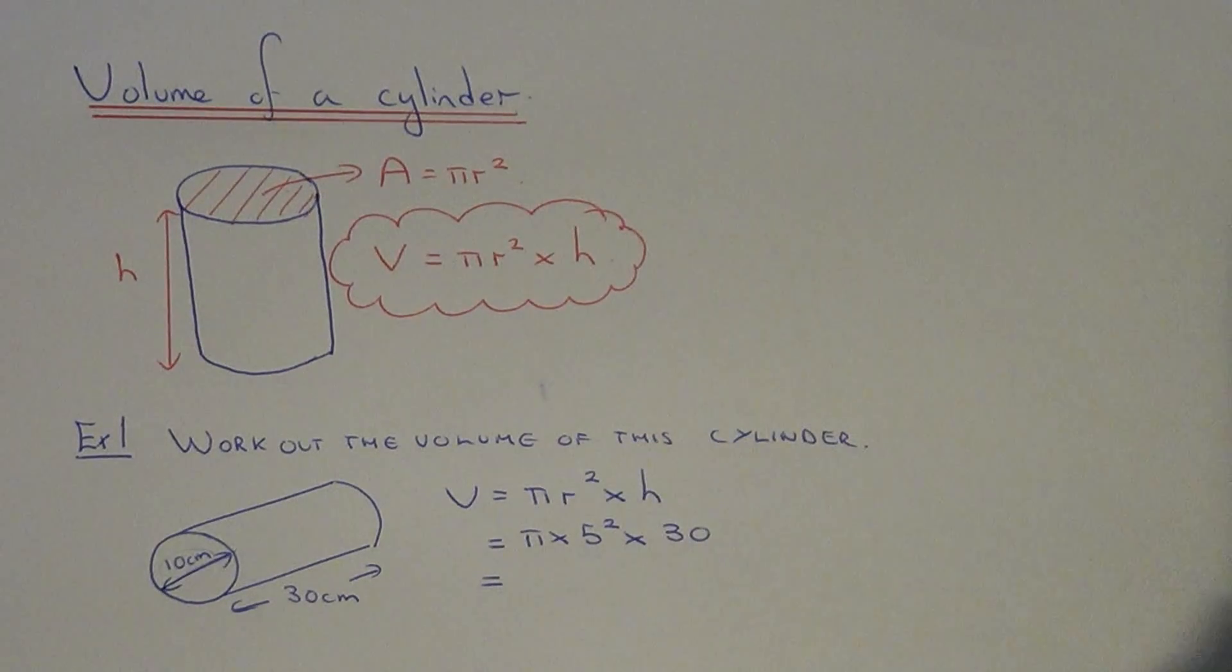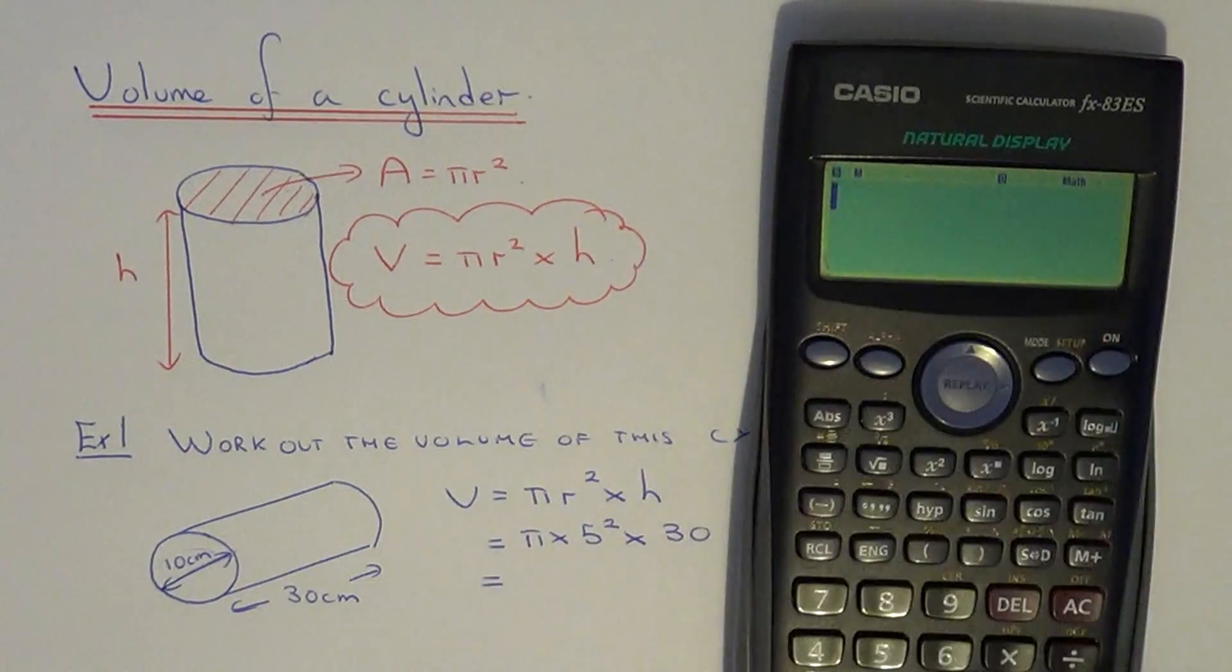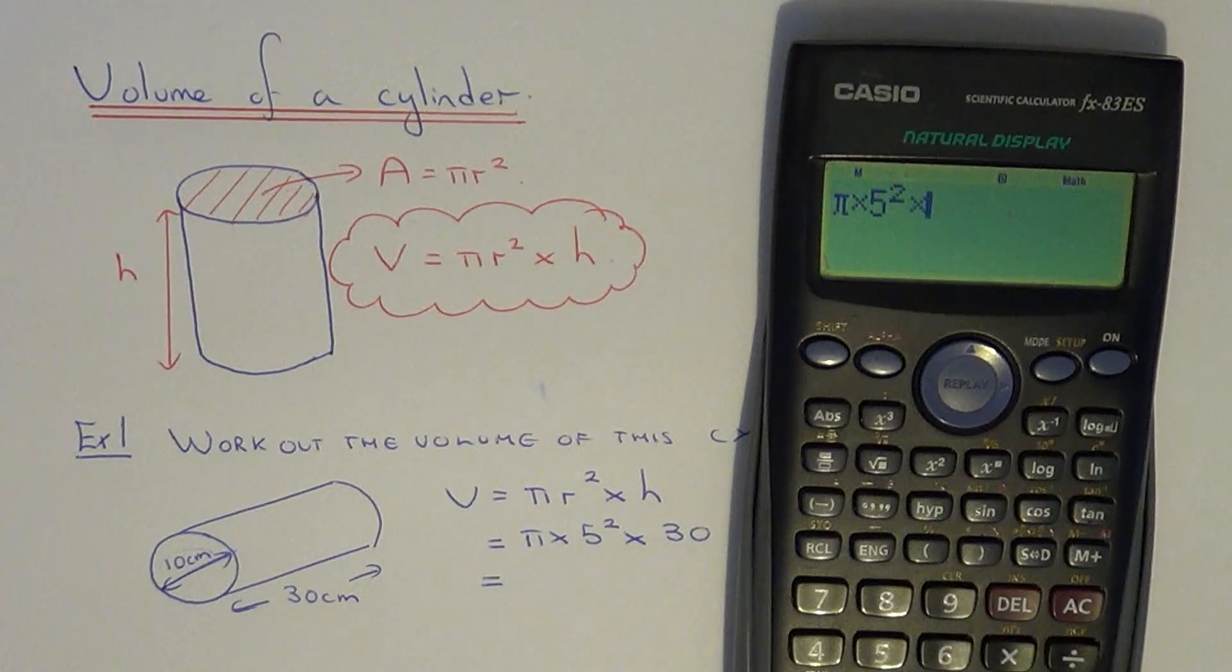So if you type this on your calculator, shift pi times 5 squared times 30.